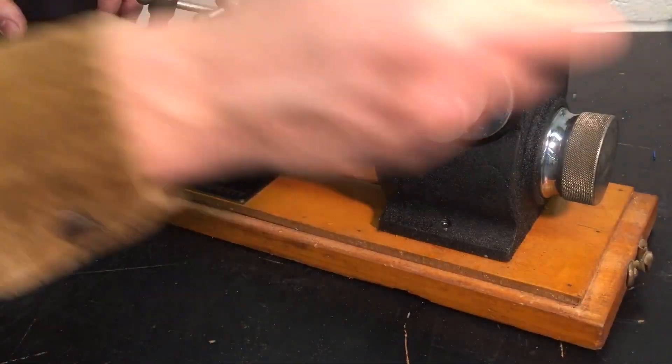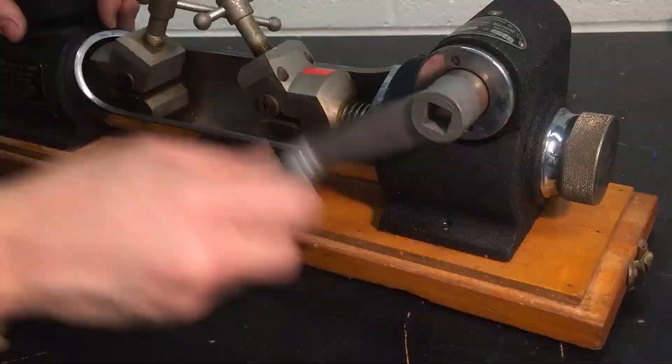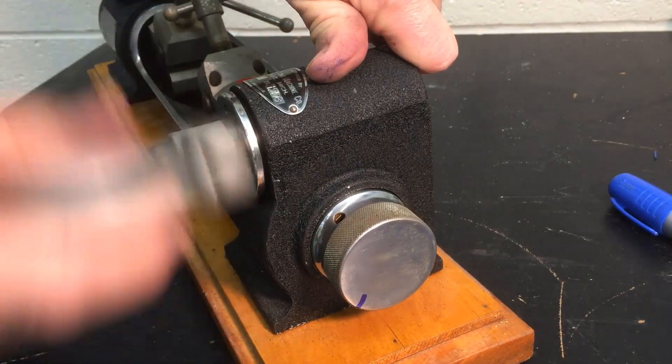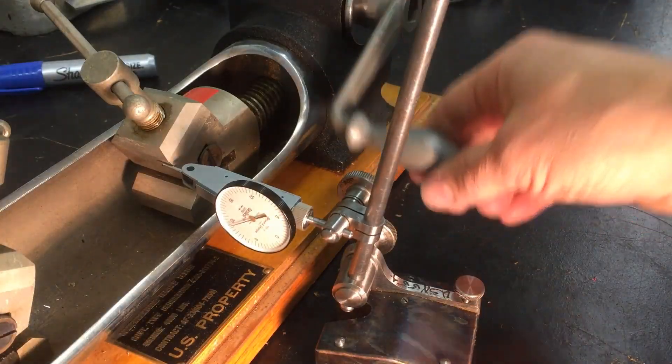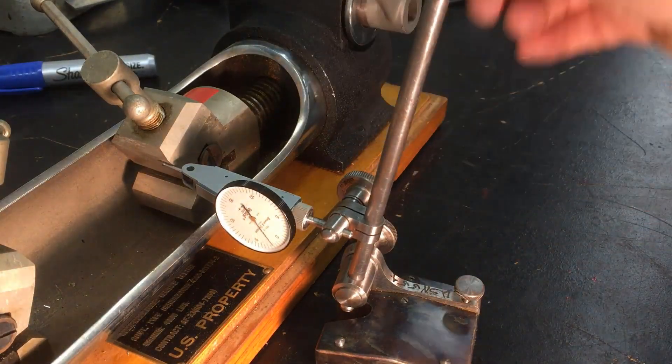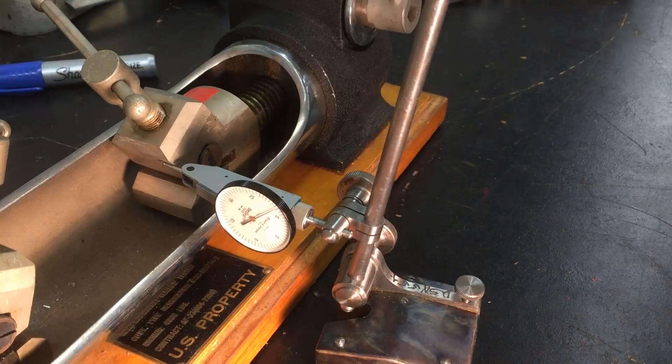When I turn the crank on this tensile tester it turns a gear that slowly moves the grips apart. It's hard to see so I'll set this indicator on it to show you. Now you can see that the grips slowly move away from each other as I turn the crank.